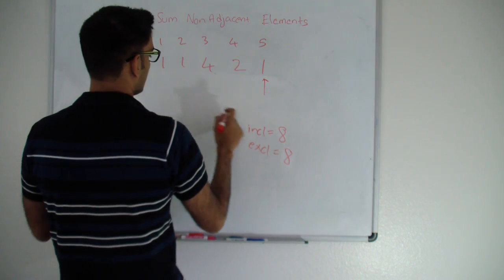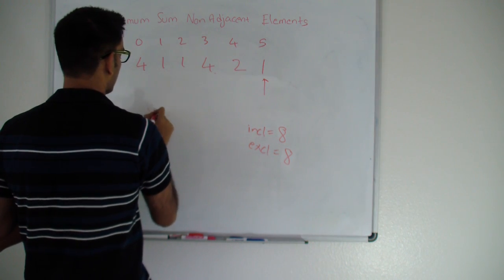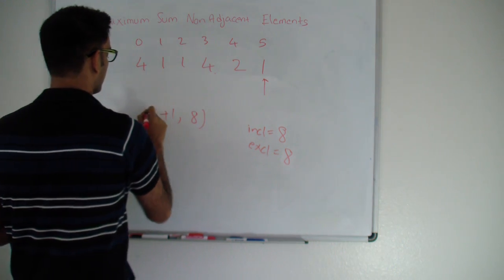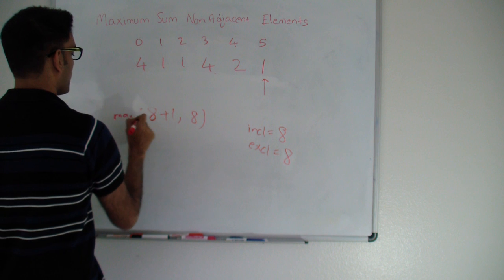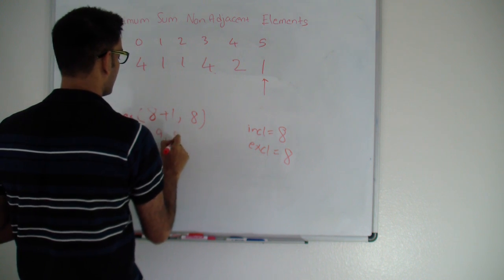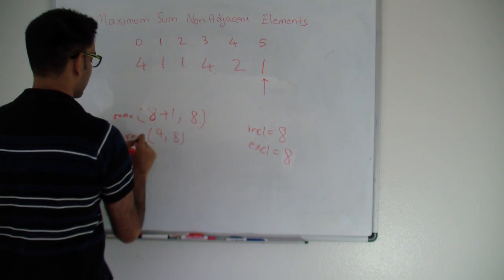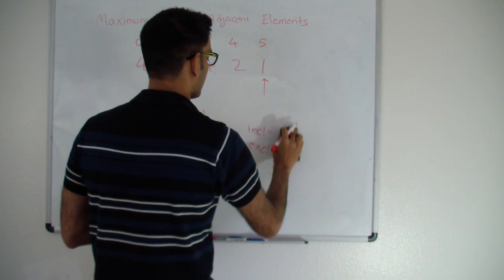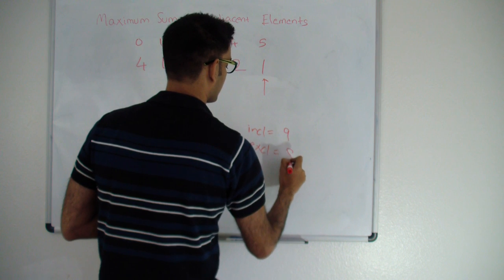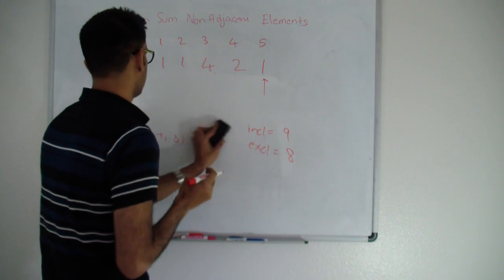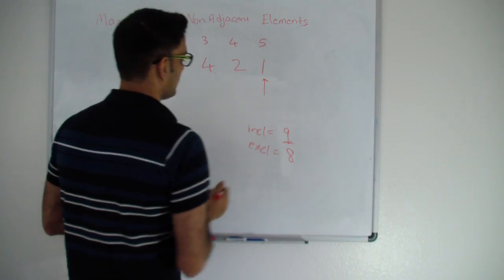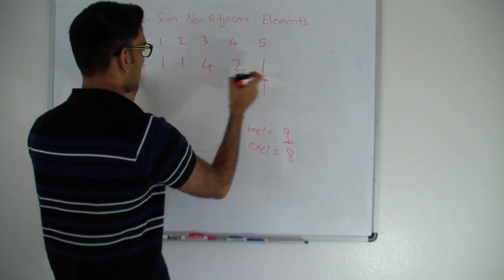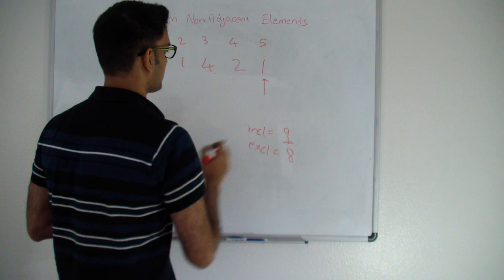For the last element: my new inclusive is max(old exclusive + 1, old inclusive) = max(8+1, 8) = max(9, 8) = 9. My new exclusive is the old inclusive which is 8. So my answer is 9 — this tells me the best I can do from the 0th element to this point, so we return this value.